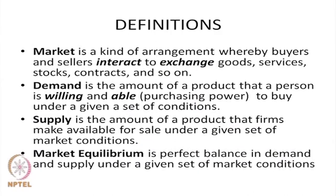The second definition is Demand. What exactly do we mean by Demand? Demand is basically the quantity of a commodity or the amount of a product or service that a person is willing and able to buy under a given set of conditions. The two keywords here are willing and able — the person must be desirous of acquiring a product and must have sufficient purchasing power to acquire it.